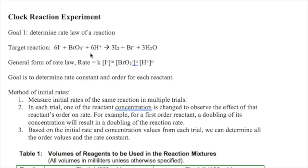Iodide plus bromate plus proton producing some products. Now the general form of the rate law would be rate equals K, the rate constant, times the concentration of each reactant raised to its order. The goal is to determine the rate constant and the order with respect to each reactant.